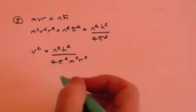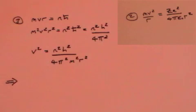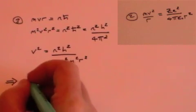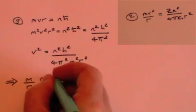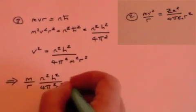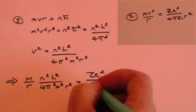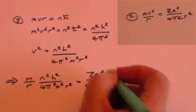Now we're going to substitute that v squared in our second equation, and that will produce m over r times v squared, which is this term, n squared h squared over 4 pi squared m squared r squared equals z e squared divided by 4 pi epsilon naught r squared.